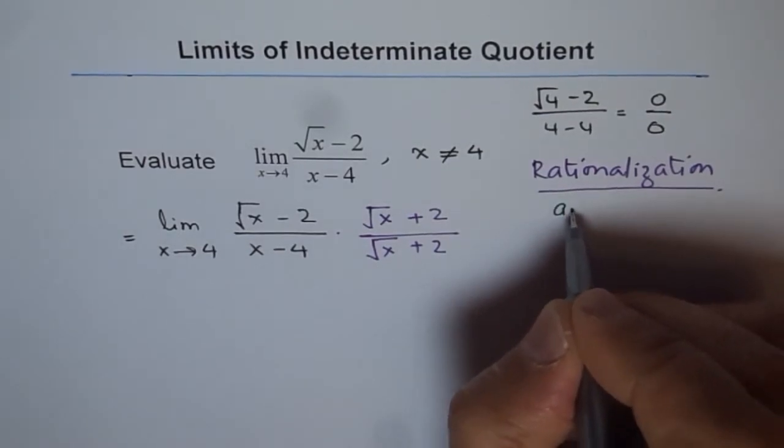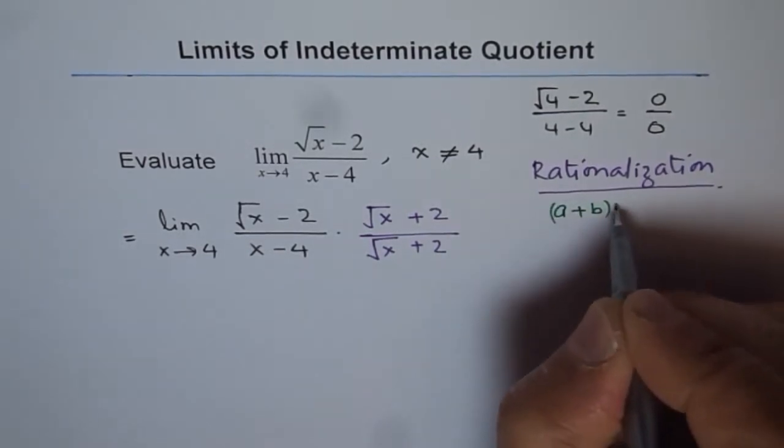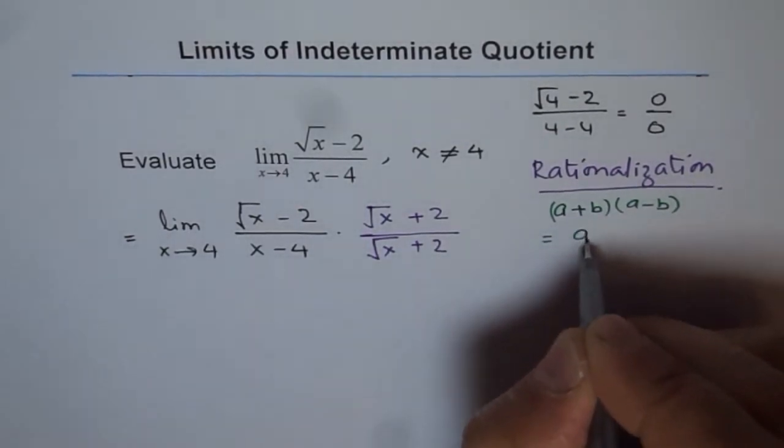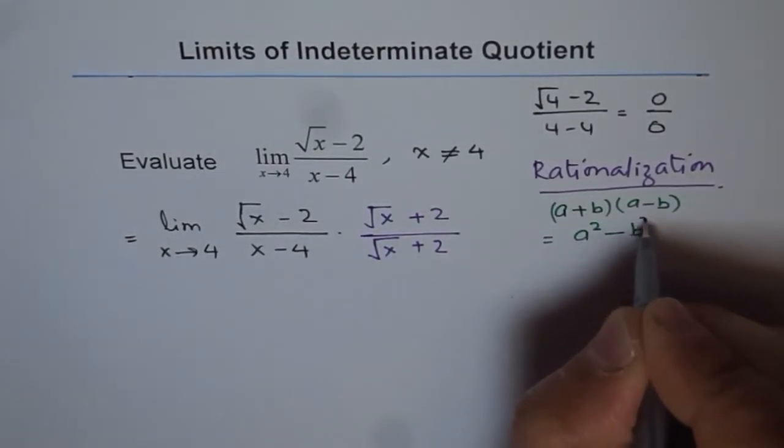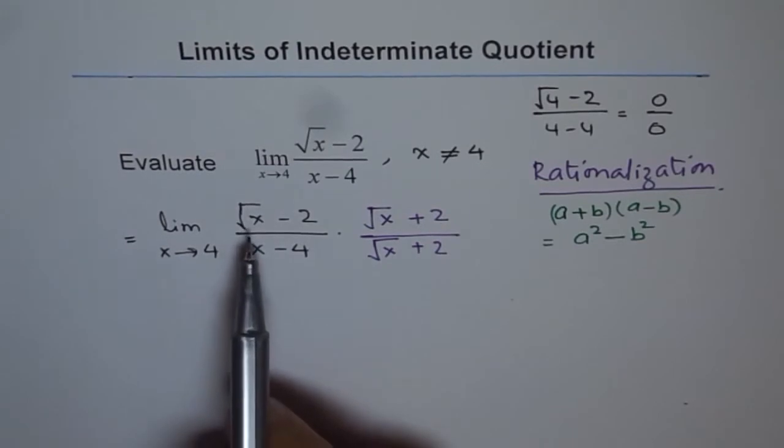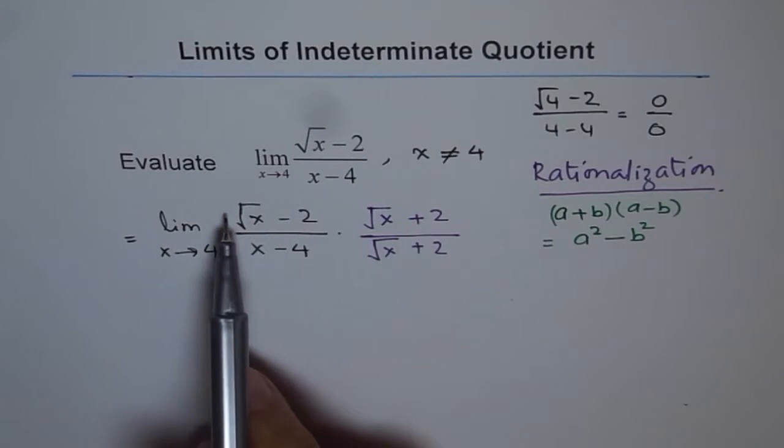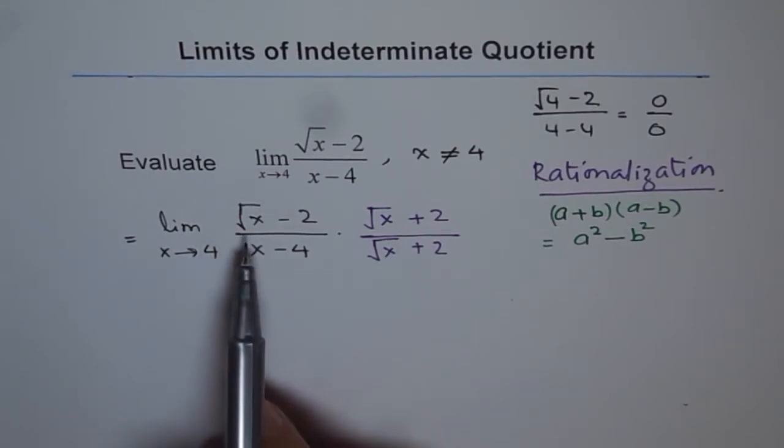Now, how does it work? So, when you have, remember this, a plus b times a minus b. What is this equal to? It is a square minus b square. Now, in square root, if you square it, it becomes, it gets rid of the square root, right? So, that is the whole idea.